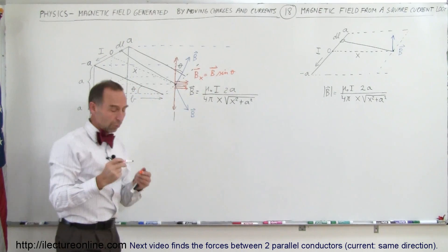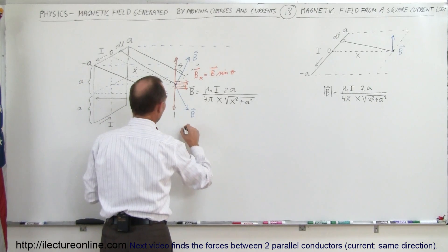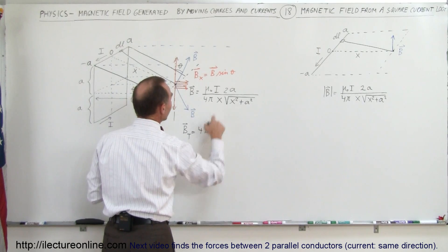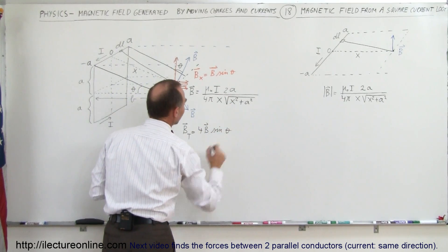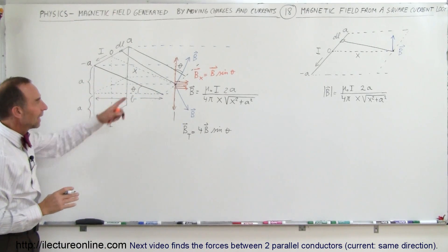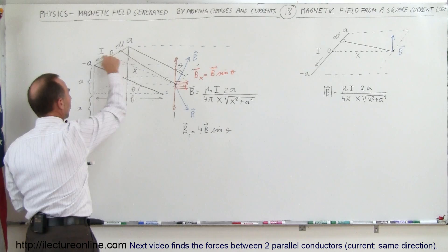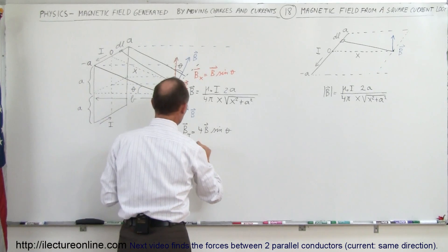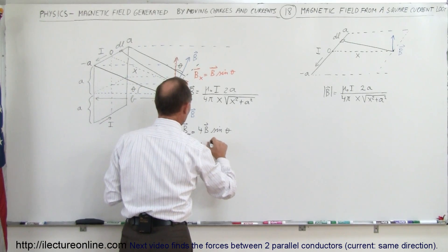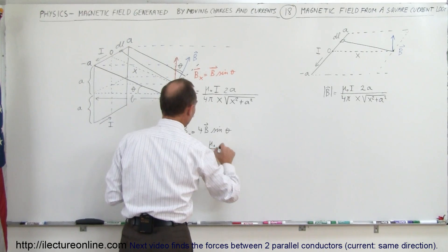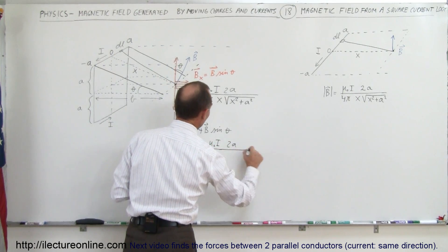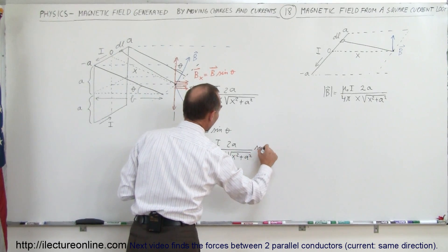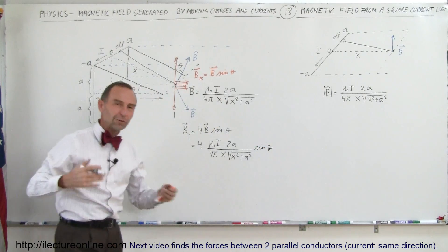There are four such segments, so the total B field is equal to four times the individual segment contribution, times the sine of theta — because that's the only component that survives. Writing out the full equation: B_total = 4 × (μ₀ / 4π) × I × 2A divided by x times the square root of x² + A², times sine of theta.